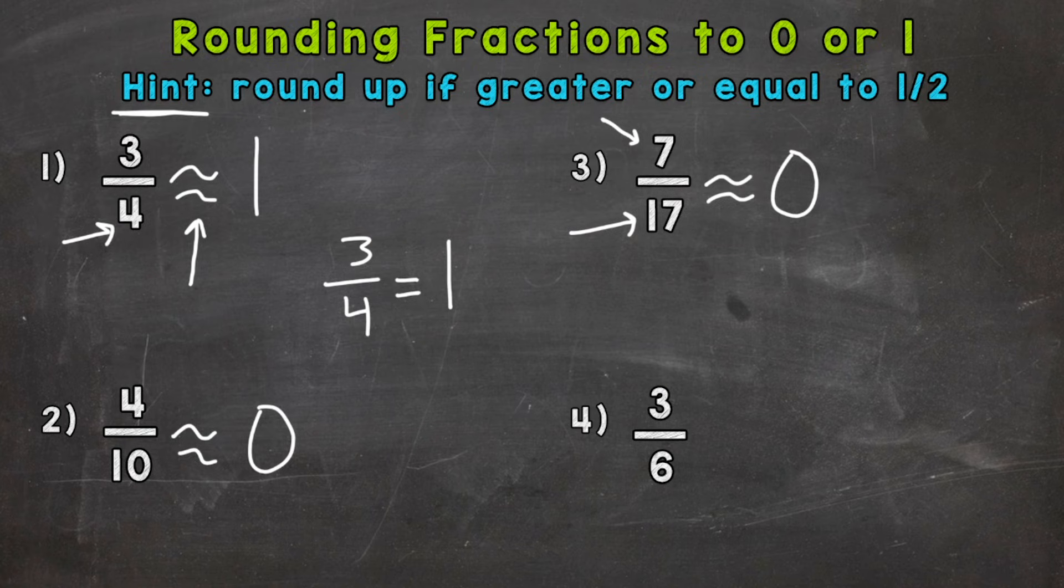And number 4, we have 3 sixths, and that's actually equal to a half. So if you ever have a fraction equal to a half, it rounds up to the next whole number. Or in this case, we are between 0 and 1, so this rounds to 1.